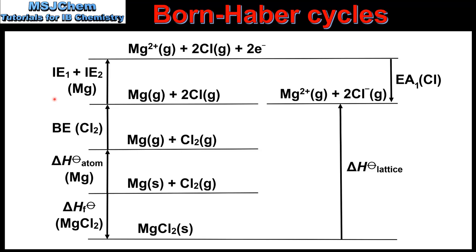Next we have ionization energy, which is the energy required to remove one mole of electrons from one mole of gaseous atoms. On the right we have the first electron affinity, which is the energy released when one mole of electrons is added to one mole of gaseous atoms. And finally we have the lattice enthalpy, in which one mole of a solid ionic compound is broken down into gaseous ions.